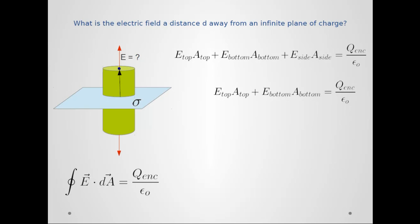And additionally, this is a cylinder, and we know that the areas of the faces are the same. So instead of writing this as E_top and E_bottom, why don't I just write it as E, and instead of A_top and A_bottom, I'm going to write it as A. And now I have 2EA = Q_enc/ε₀.